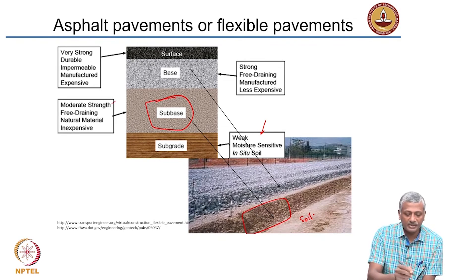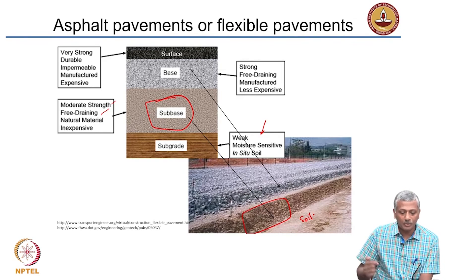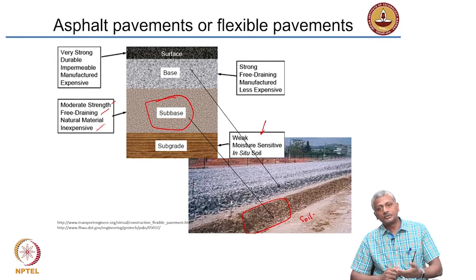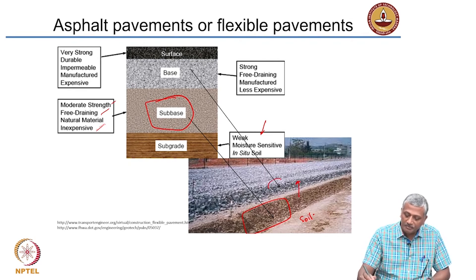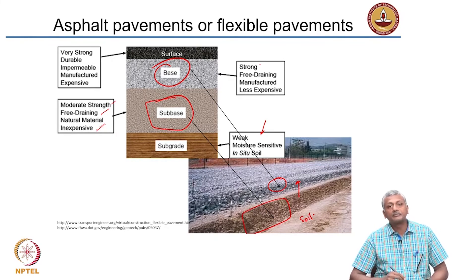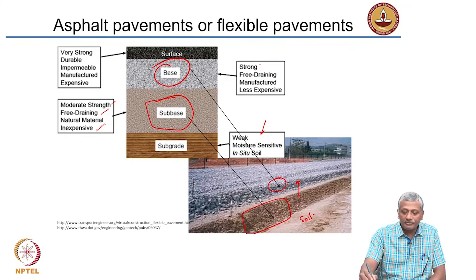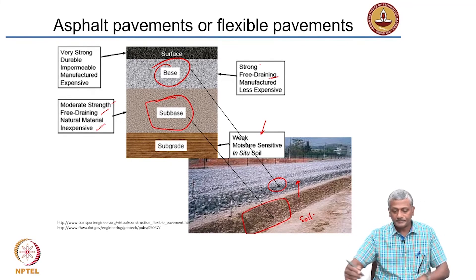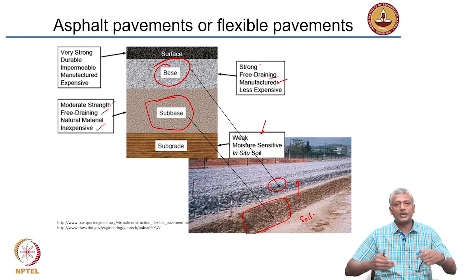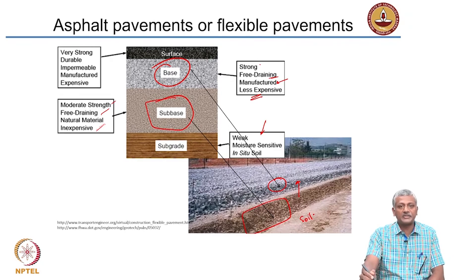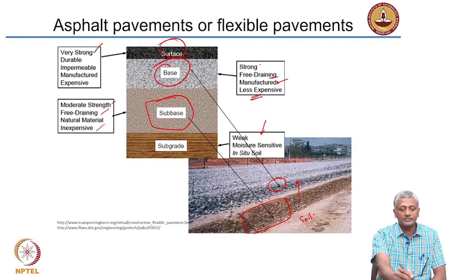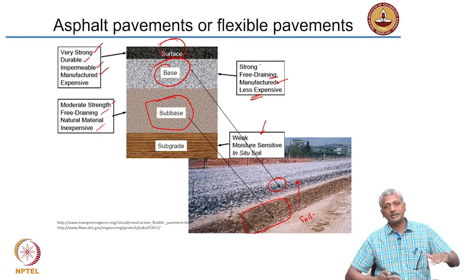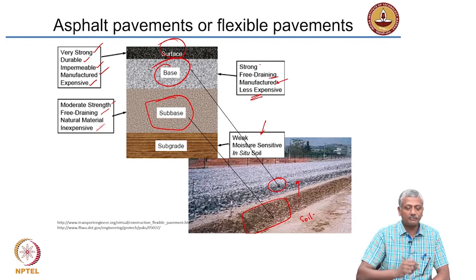The sub-base has moderate strength and is free draining, meaning water can get out of it. It is usually made with natural materials like sand or soil and is inexpensive. The base course is strong due to compacted granular materials and also free draining. It is manufactured — placed and compacted — and is less expensive than the asphalt concrete layer above it. The top asphalt concrete layer is very strong, durable, impermeable, and the most expensive.